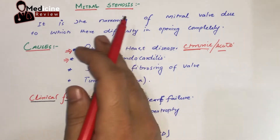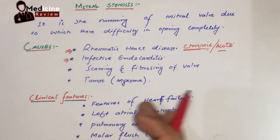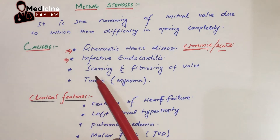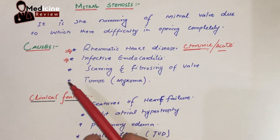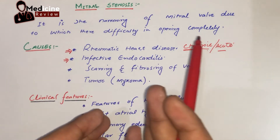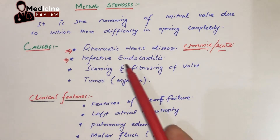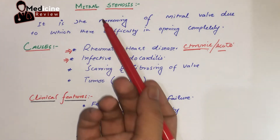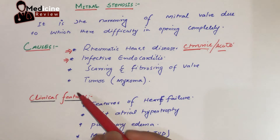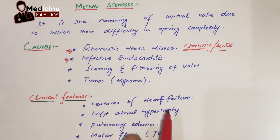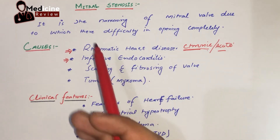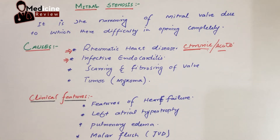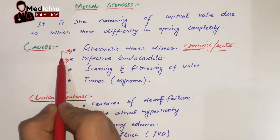Another cause is infective endocarditis, which is also a chronic process leading to mitral stenosis. Scarring or fibrosis of the mitral valve due to high pressure injury or inflammation can also lead to mitral stenosis. Another cause is a tumor, specifically myxoma, which is a benign tumor that can block the mitral valve and cause mitral stenosis.